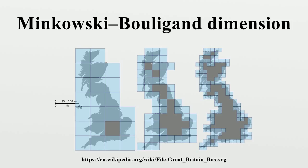It is named after the German mathematician Hermann Minkowski and the French mathematician Georges Bouligand. To calculate this dimension for a fractal S, imagine this fractal lying on an evenly spaced grid, and count how many boxes are required to cover the set. The box-counting dimension is calculated by seeing how this number changes as we make the grid finer by applying a box-counting algorithm.